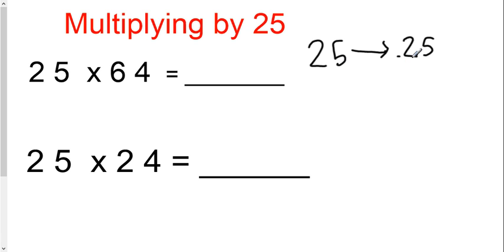So I'm going to call 25 0.25, and 0.25 is 1 fourth. So when I multiply a number by 25, it's a lot like multiplying it by 1 fourth or dividing it by 4. So that's what I'm going to do.